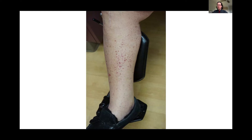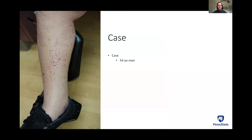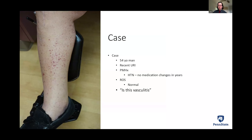A day in my clinic often looks like this: a patient comes in because another doctor asked if this is vasculitis. In this example, I have a 54-year-old man who had a cold—a URI—recently. His past medical history includes high blood pressure on stable medications. His review of systems is unremarkable other than a rash on his leg that burns and itches. He came in with a referral asking, is this vasculitis?